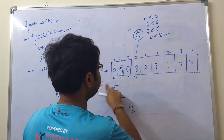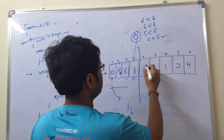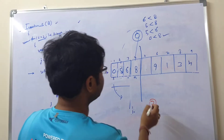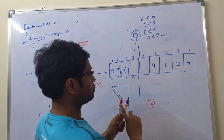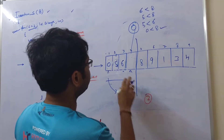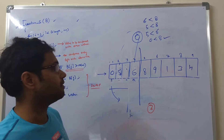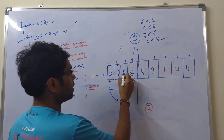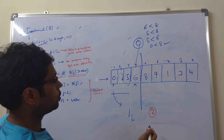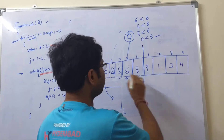Our four numbers are solved. Now we take 2. We compare 2 with 8 — 2 is less, so we shift 8. Then 2 is less than 6, so we shift 6. Two is also less than 5, so we shift 5. Then we compare 2 with 0 — 2 is not less than 0, that is false. As soon as the condition becomes false, we place the number 2 here. Now all five numbers are sorted.